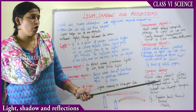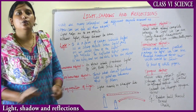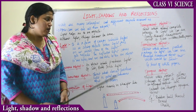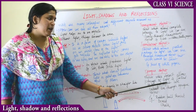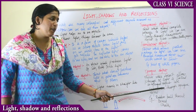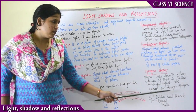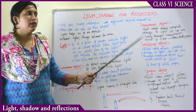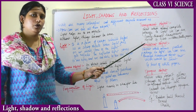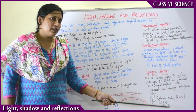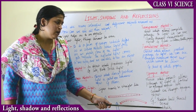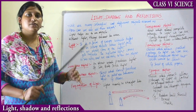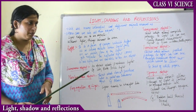Opaque objects do not allow light to pass through them and we cannot see through them. For example, this whiteboard — I cannot see what is behind it. Rubber balls, pencils, boards, chalk pieces, and scales are all opaque objects which do not allow light to pass through them.